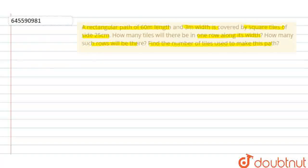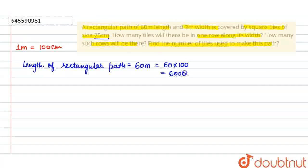This question is about a rectangular path which is given length and breadth. First of all, we will write length of rectangular path. Length of rectangular path is given 60 meter. We will convert this because our tiles are square. 1 meter equals to 100 cm, so 60 meter will be 60 into 100, which means 6000 cm.